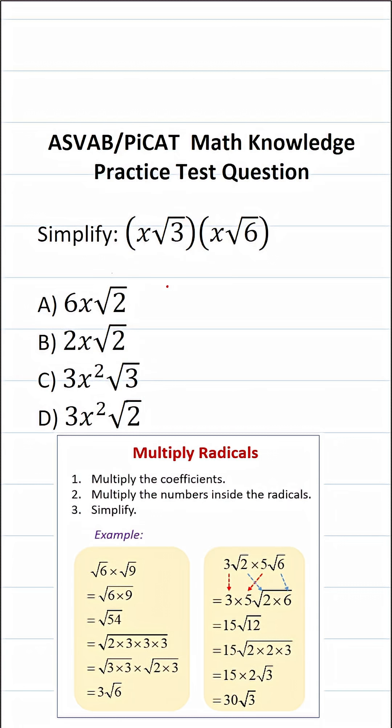This math knowledge practice test question for the ASVAB and PiCAT says simplify x square root three times x square root six.